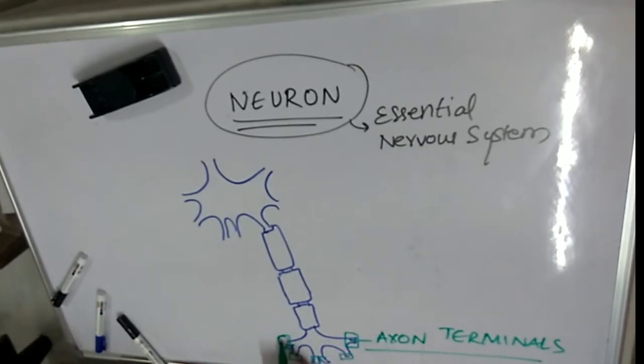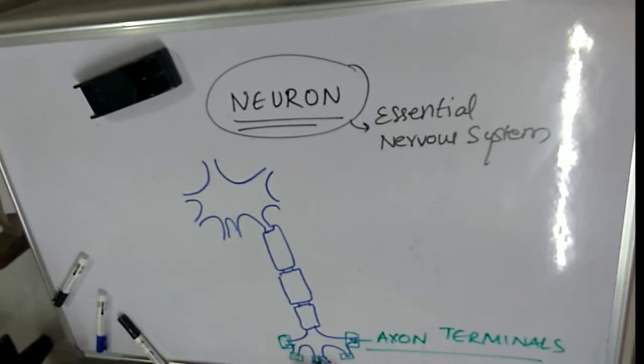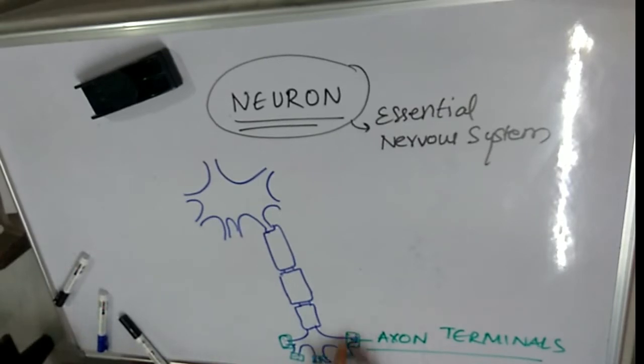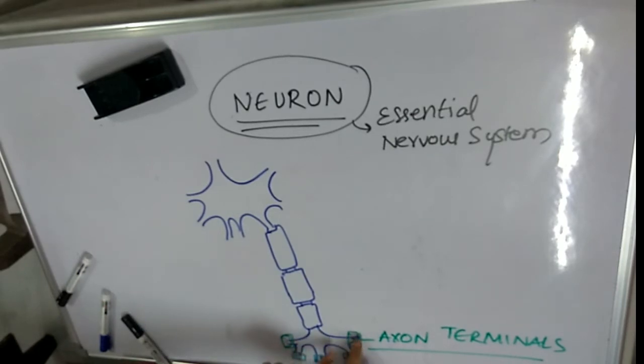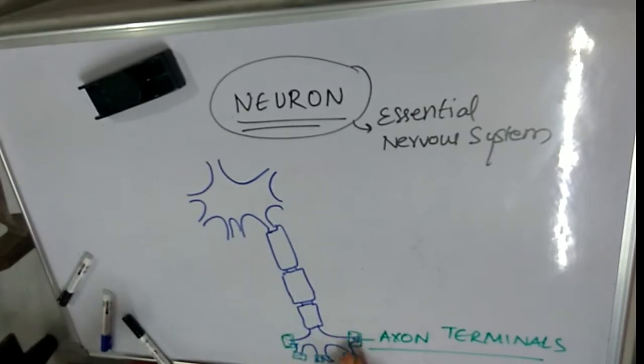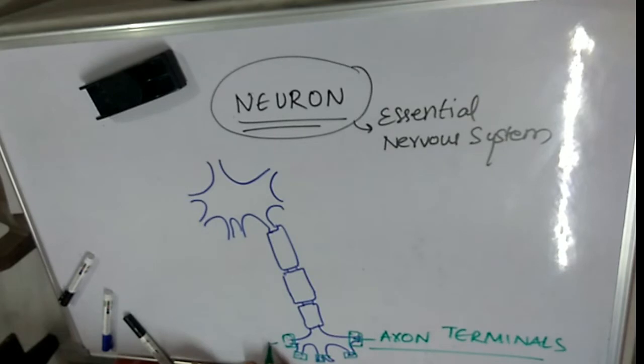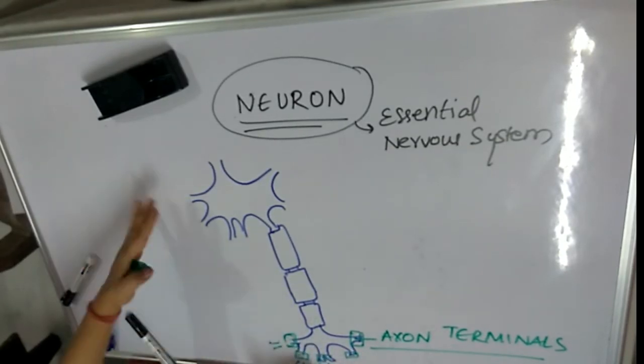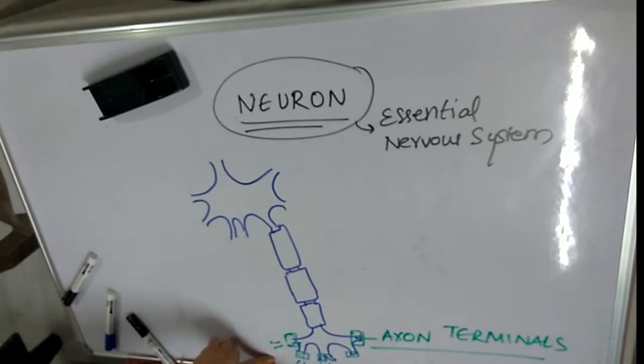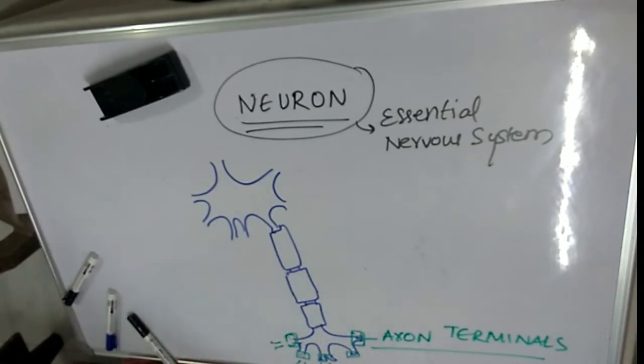They have vesicles which keep the neurotransmitters inside. These are released once an electrical impulse flows down the neuron to this end, releasing the stored neurotransmitters outside. The other neuron present at the end would receive these neurotransmitters and respond accordingly.